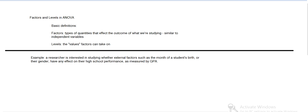So if a researcher is looking at the month of a student's birth and their gender, and testing whether that has an effect on their GPA. So those are two factors that he's studying. They're like independent variables, and he's checking if they have any effect on their GPA. So those are factors.